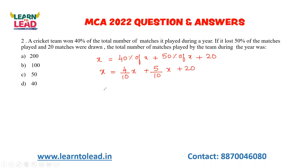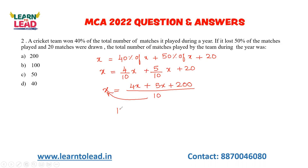Now solving the equation: taking 10 as common, LCM gives 4X + 5X + 200. So 10X = 9X + 200, therefore X = 200. That is the total number of matches played.